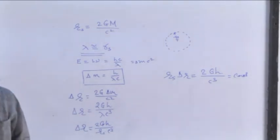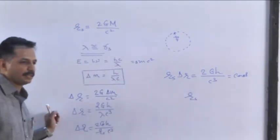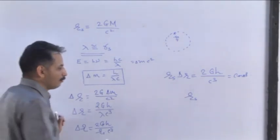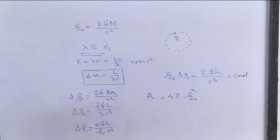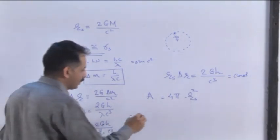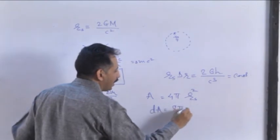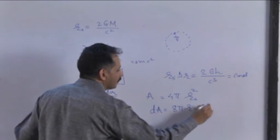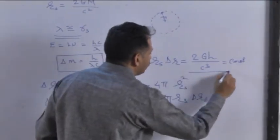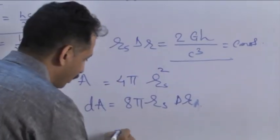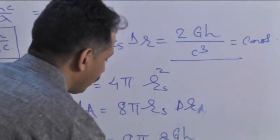Now, what is increasing the surface area of the Schwarzschild radius? If we consider rs to be radius of the sphere, then 4πrs² would be area of the Schwarzschild sphere. And if I differentiate this equation, dA will be equal to 8πrs into delta rs. So here, rs into delta r is 2Gh upon c squared. So dA is equal to 8π times 2Gh upon c squared.